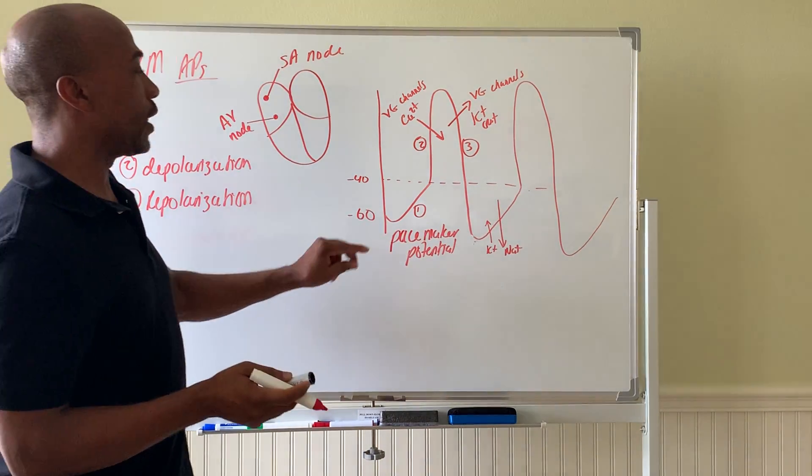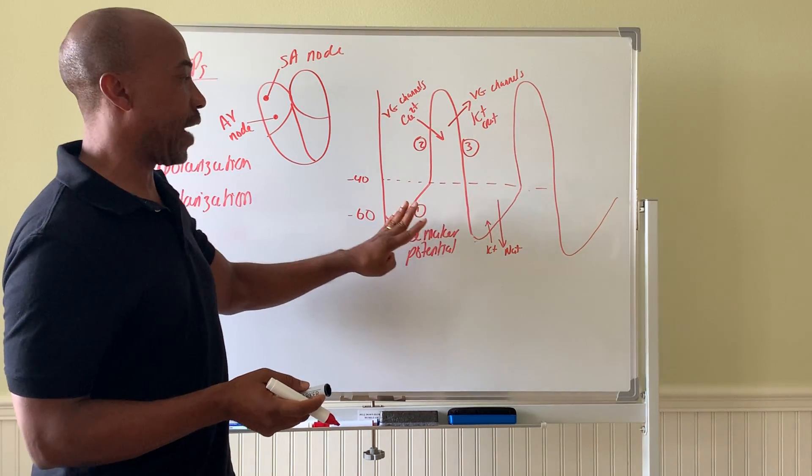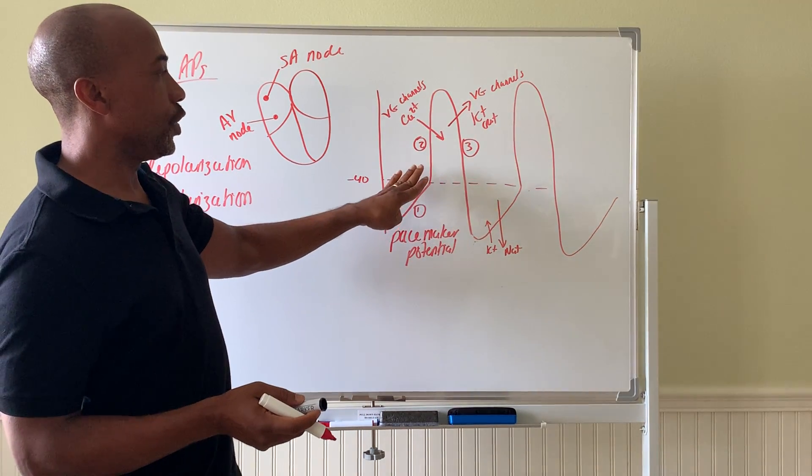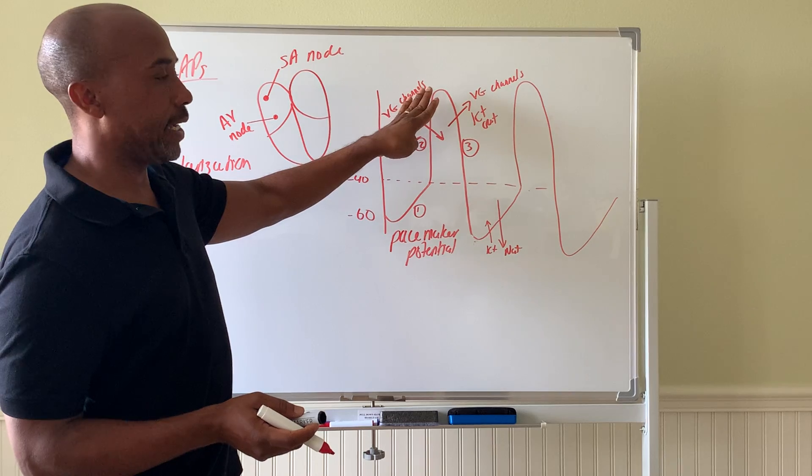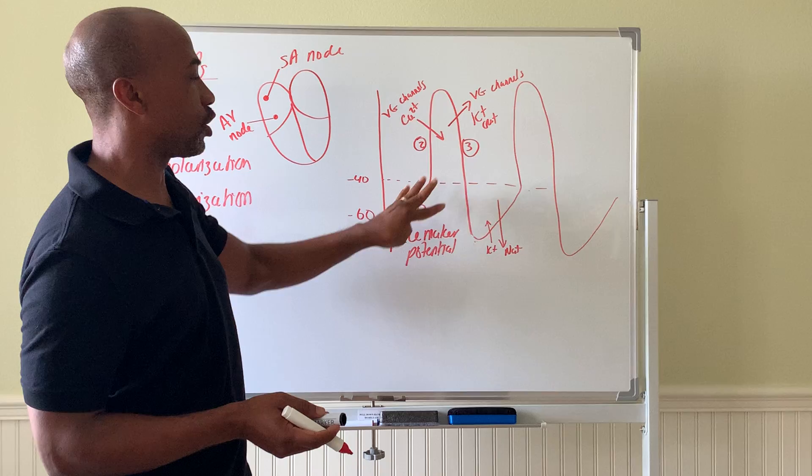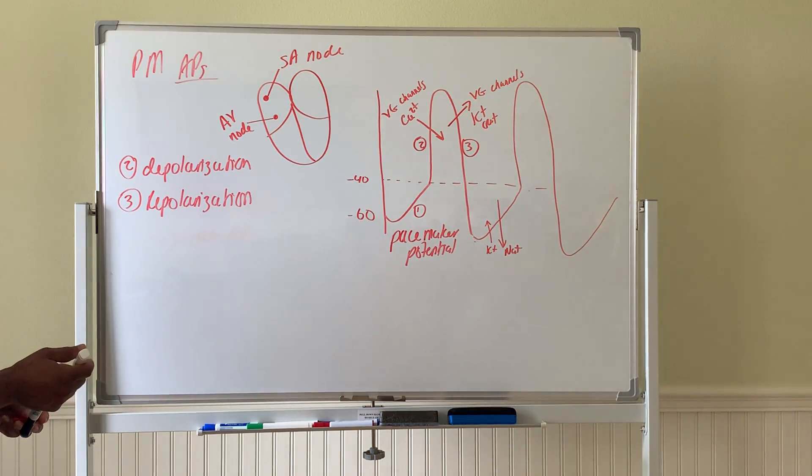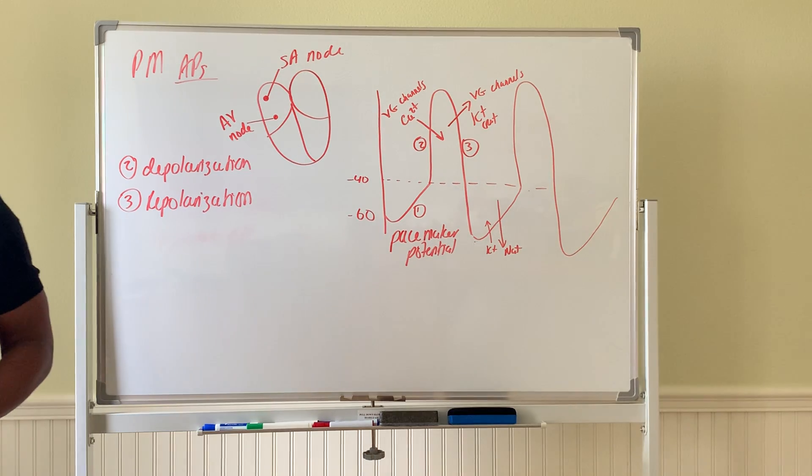So I want you guys to know what the three phases are and what ions drive them. You have your pacemaker potential is phase one, your depolarization phase driven by calcium in, your repolarization phase driven by potassium out through voltage-gated channels. And these are all voltage-gated channels that's driving the action potential of your pacemaker cells.